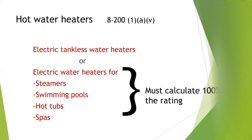For hot water heaters — Rule 8-200 1-A-5 — electric tankless water heaters, or electric water heaters for steamers, pools, hot tubs, and spas are all calculated at 100%. You have to think that thing can turn on at any time and has to keep up with demand — on-demand water heaters, like the Navien system. That's why you take them at 100%.